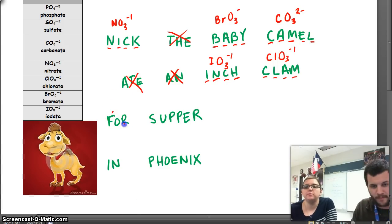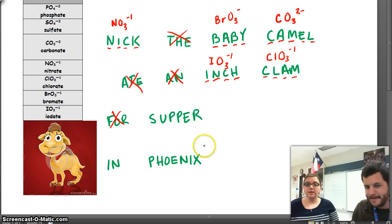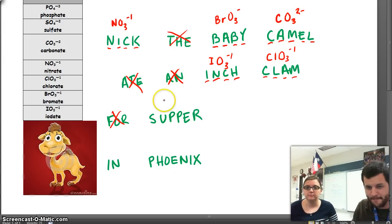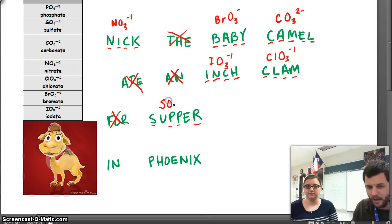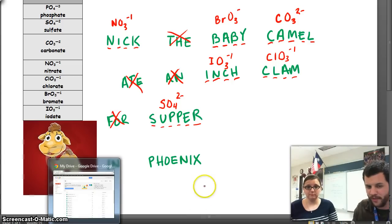'For' is a filler word. We've got a long word here — supper. Supper is for sulfate. Sulfate starts with what element? Sulfur. Consonants are going to be oxygen: one, two, three, four. Different! So SO4. And same — vowels are the charge: one, two. So sulfate is SO4 with a 2- charge.